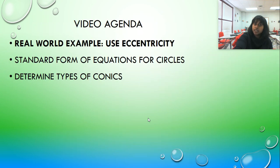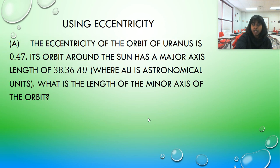But I don't necessarily need you to calculate eccentricity by itself. I do need you to understand how to use it in a real world problem. So this is the type of question you're going to be solving for yourself. The eccentricity of the orbit of Uranus is 0.47. Its orbit around the sun has a major axis length of 38.36 AU, where AU is astronomical units. What is the length of the minor axis of this orbit? We can totally do that if we have characteristics of our axis length. But there is a relationship from eccentricity to the length that we need to show you.